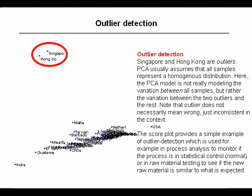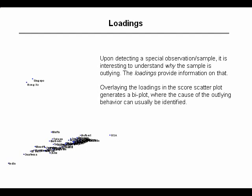In a simple score plot like this, we already get an indication of whether a sample is an outlier. This is exactly how it's used, for example, to detect whether a process is running appropriately or whether the process is going out of control. When we have detected samples like Singapore and Hong Kong, or outliers in general, we want to understand why they are outliers. The loadings will tell us what the reason is for these samples being located where they are.